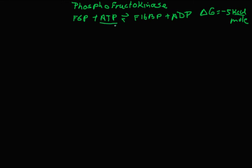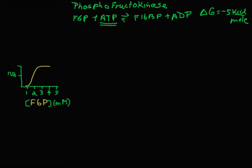When there's too much energy in the cell, ATP — in addition to being a substrate — is an allosteric inhibitor of phosphofructokinase. Looking at the kinetics, we see the velocity of the reaction at different concentrations of fructose 6-phosphate. This can be described by the Michaelis-Menten equation, except that you have a characteristic S-shaped curve, which is what you see with positive cooperativity. These are non-Michaelis-Menten kinetics because of the S-shaped curve.